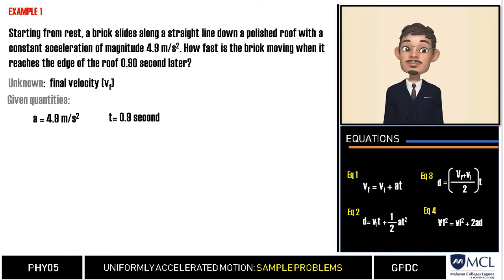Because it starts from rest, then the initial velocity is zero. Using the given in this problem, what do you think is the working equation we shall use? Very good. Vf is equal to Vi plus at.